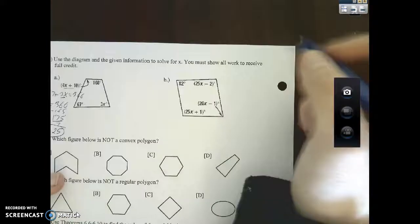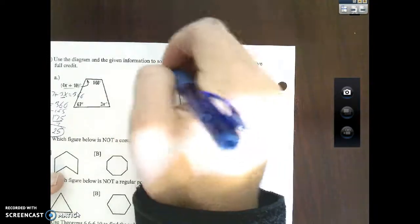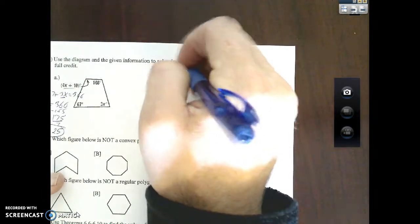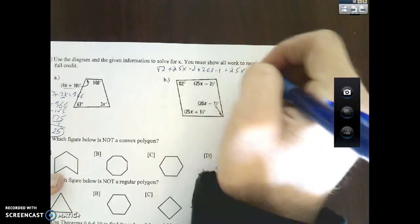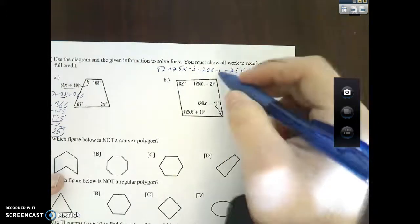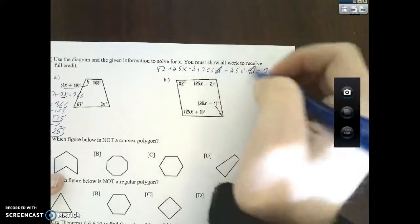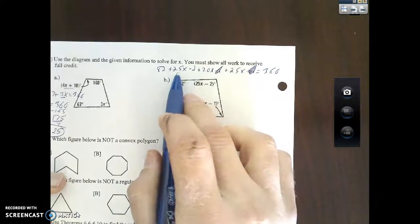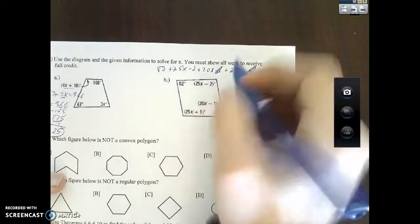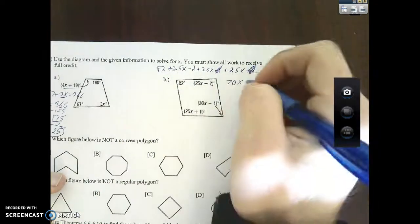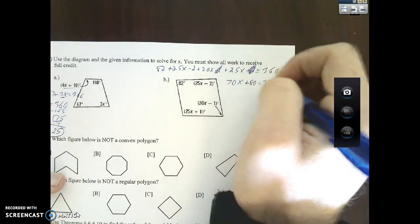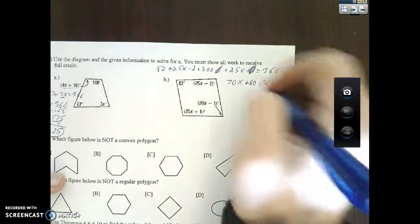Part B, same idea. I got 82 plus 25x minus 2 plus 20x minus 1 plus 25x plus 1 equals 360. Plus 1 minus 1 cancel out. Let's see here: 25x plus 25x plus 20x is 70x, and then 82 minus 2 is 80. Subtract 80 over.